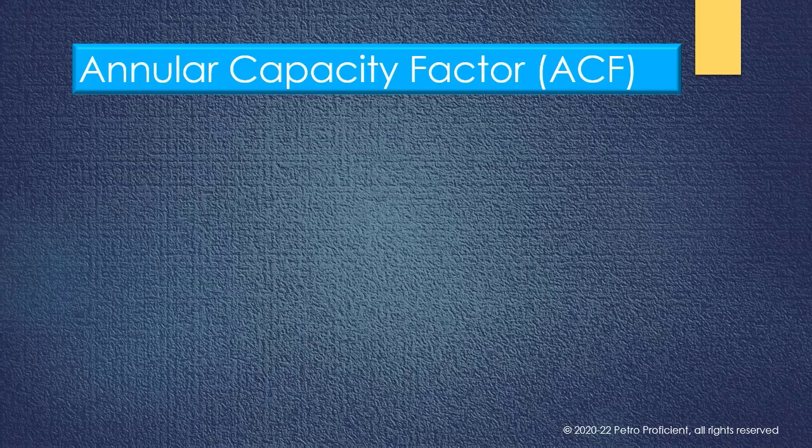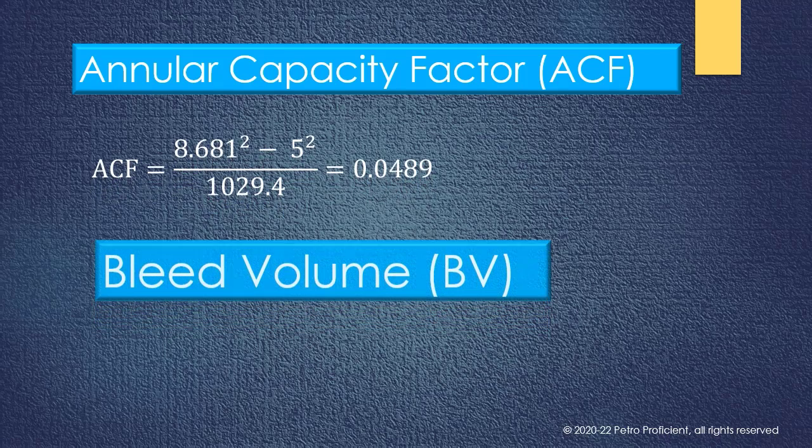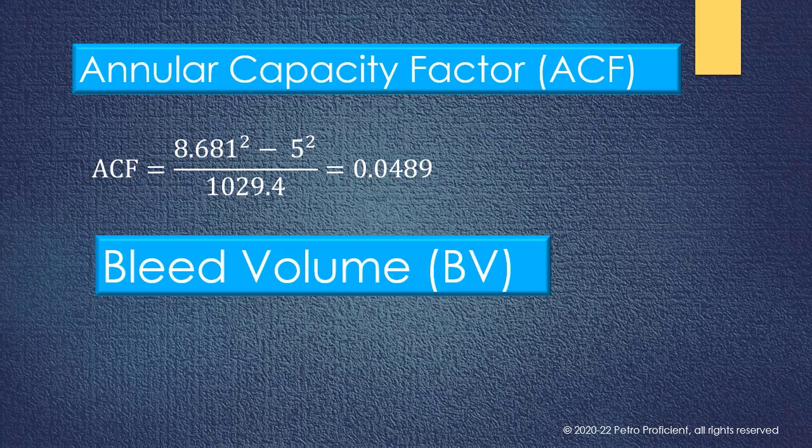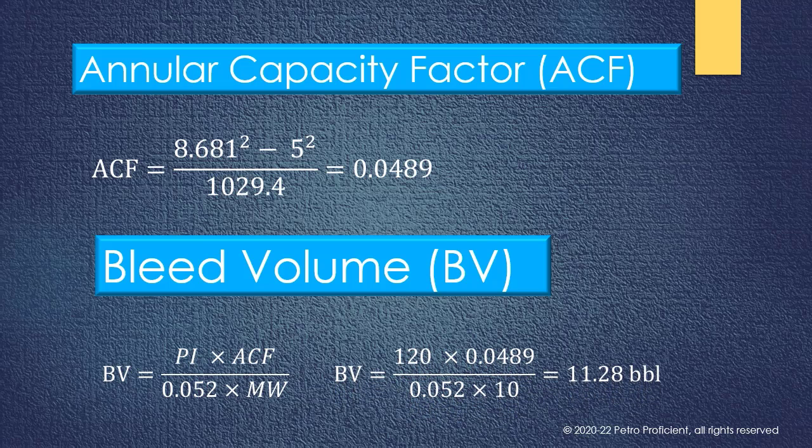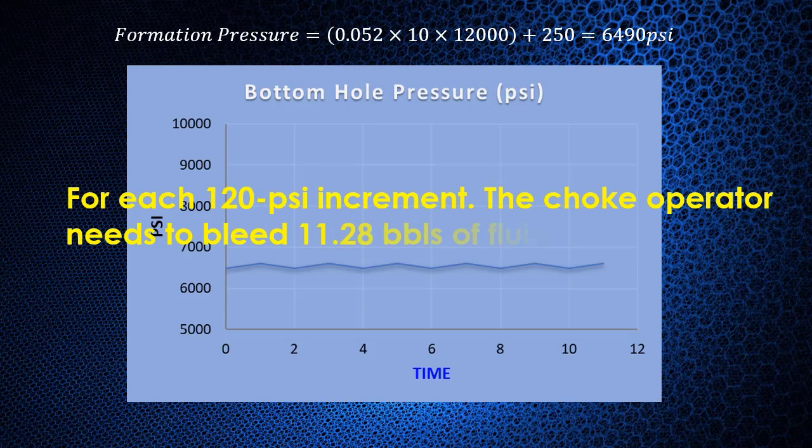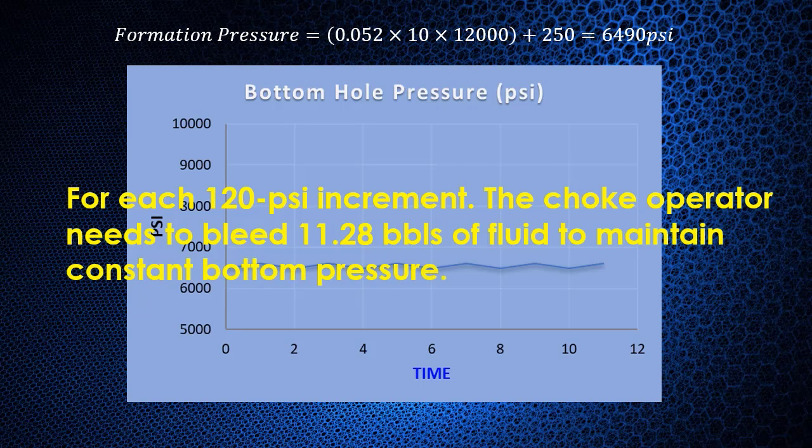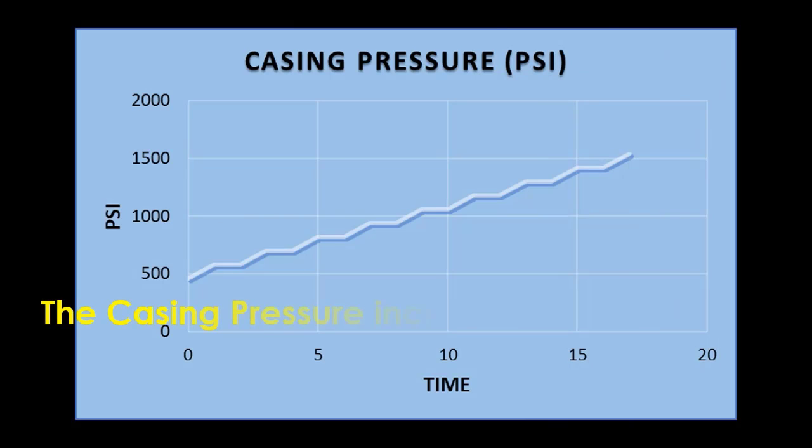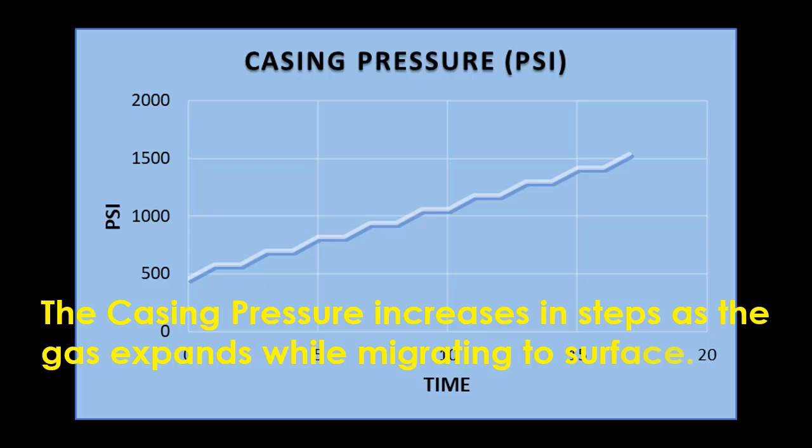The two parameters calculated are annular capacity factor or annular volume and bleed volume. For each 120 pound per square inch increment, the choke operator needs to bleed 11.28 barrels bleed volume to maintain constant bottom pressure. The casing pressure increases in steps as shown in the figure as the gas expands while migrating to surface, until it reaches the maximum casing pressure.